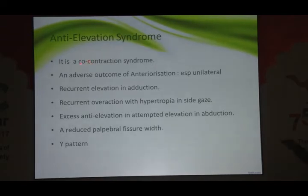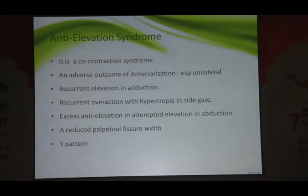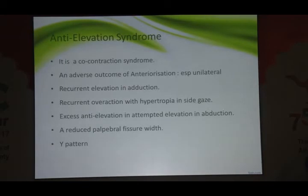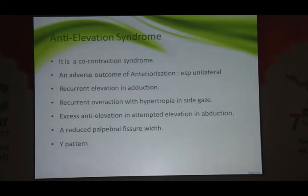Anti-elevation syndrome is basically a co-contraction syndrome. What happens is that the inferior oblique starts acting as a depressor while the superior rectus is still acting as an elevator. So when you tell the patient to look up, there is a co-contraction of inferior oblique and superior rectus. This is an adverse outcome of anteriorization, especially if done unilaterally. There would be recurrent elevation in adduction because when the patient looks in dextro or levo gaze, the inferior oblique pulls the globe down, causing co-contraction and reduced palpable fissure width, as seen in Duane's retraction syndrome. There will also be a V pattern.